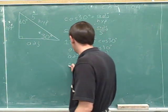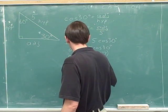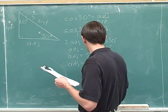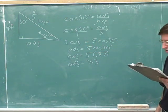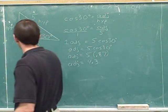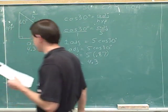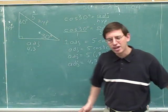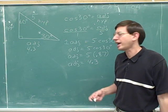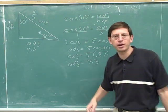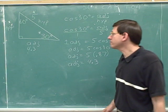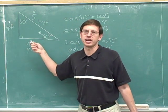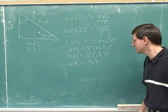Now we can do this multiplication on your calculator. 5 times 0.87 is approximately 4.3, so the adjacent side is 4.3. We can go ahead and write that down — the adjacent side has a length of 4.3. We've used trigonometry to figure something out about a triangle. Even though we were only given one side and one angle, we were able to use cosine to find another side. That's the usefulness of the trig functions.